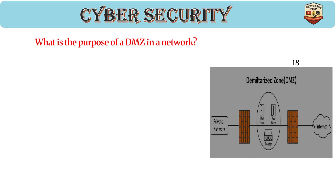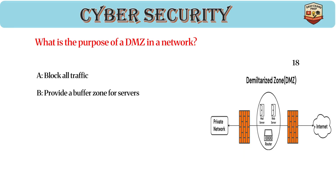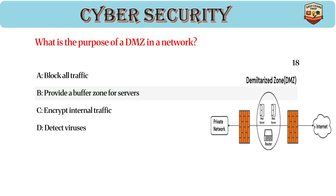What is the purpose of a DMZ in a network? Answer: B, provide a buffer zone for servers. A DMZ hosts public-facing services like web servers, isolates them from internal networks, and reduces risk from external attacks.